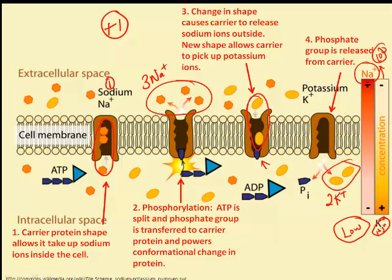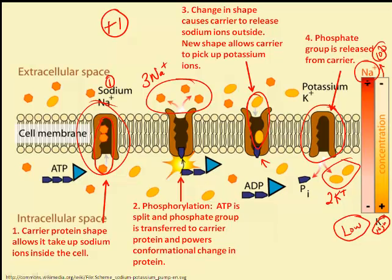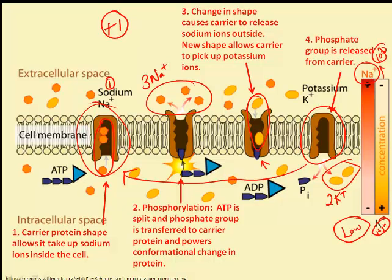In order to do so, it needs to be able to return back to its original shape. By bringing the potassium back in, that causes the conformational shape change of the carrier protein so that it can again pick up more sodium. So it's a way that this molecule resets itself.